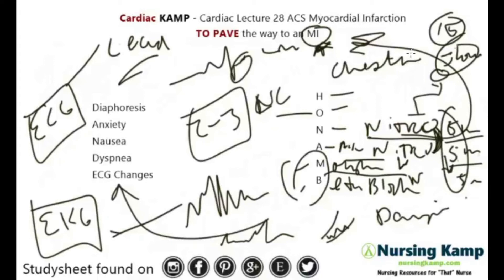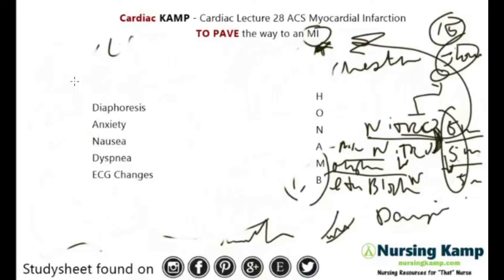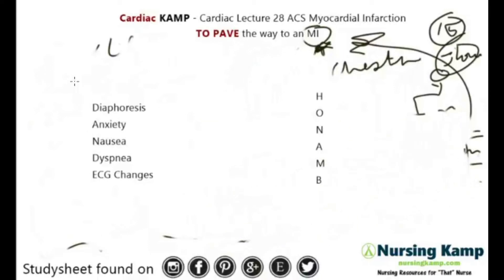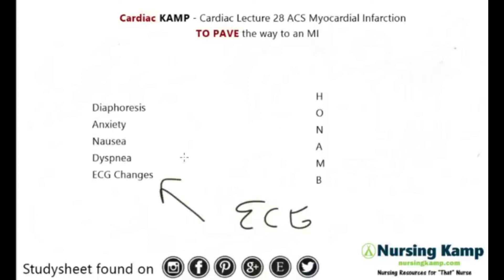Let's talk about what the patient might be feeling. We know they'll be symptomatic: diaphoretic, anxious, nauseous, dyspnea, ECG changes. With stable angina, they don't generally have that. With Prinzmetal, they don't generally have diaphoresis and ECG changes — they just generally have chest pain. That's a big indicator. You need an ECG to identify these ECG changes, so put them on a monitor.